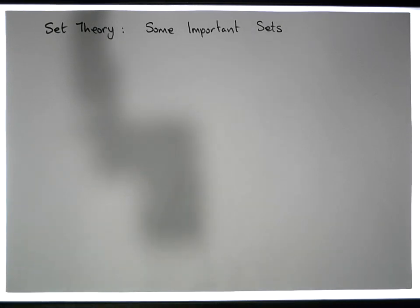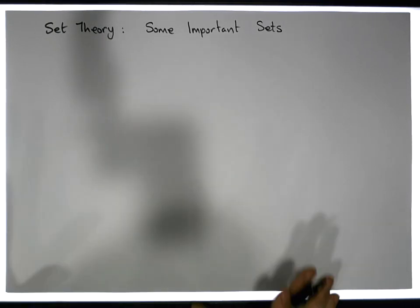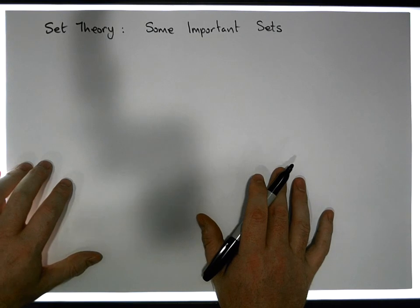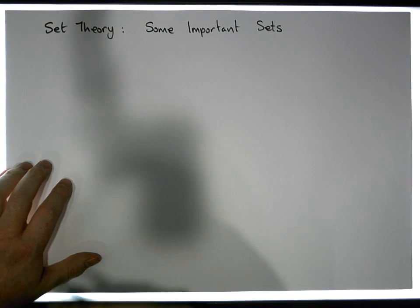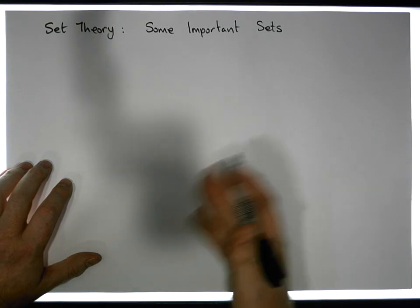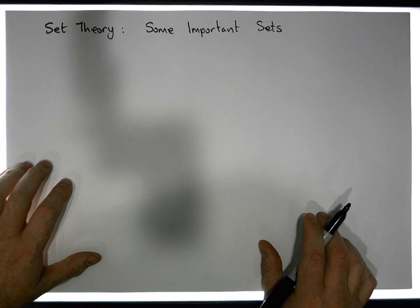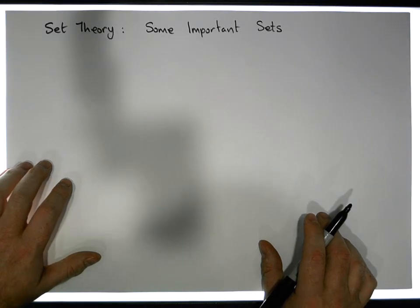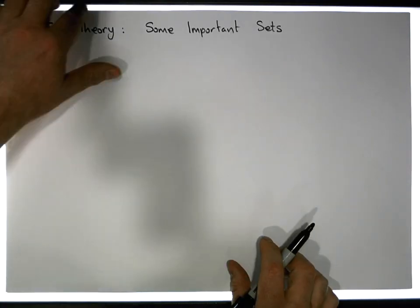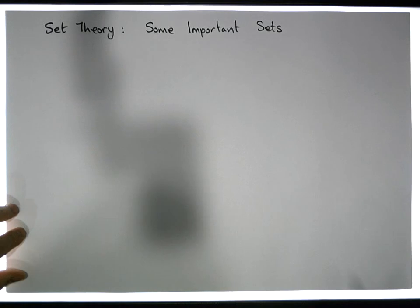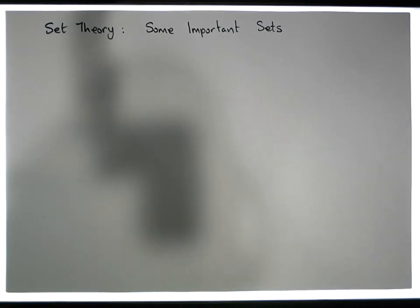There are going to be two ways that we present the sets. We're going to use what's known as roster notation, where it's pretty easy to list the components within the sets. And then we'll use another form of notation known as set builder notation. So let's define the first set of numbers that's really important from a numbers perspective.